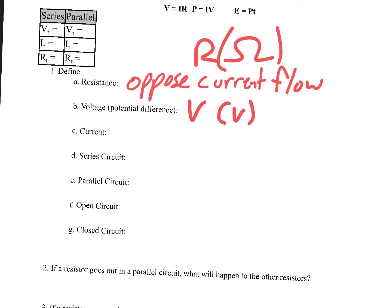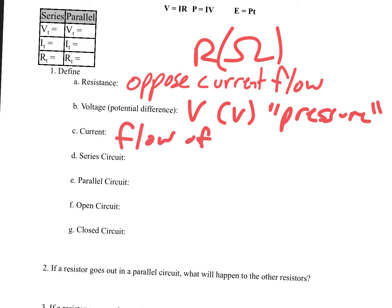You can think of voltage as the pressure or push that is causing current to flow — it's like the pressure that allows current to flow. Current is literally the flow of electrons, represented by I, and measured in amperes.